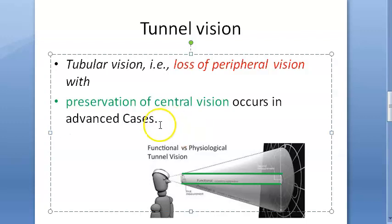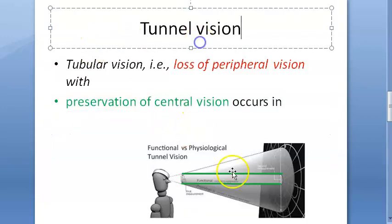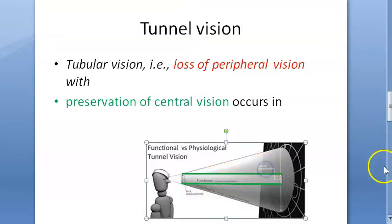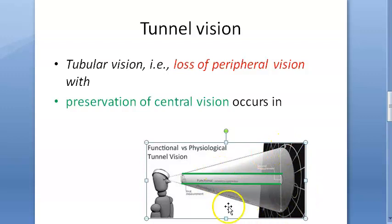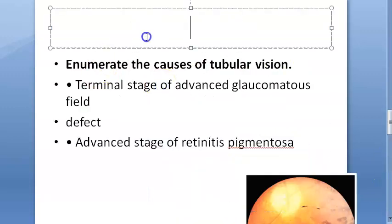Let's come to the causes. Did you understand what tunnel vision or tubular vision is? This person is able to see only a small central area and not the periphery.